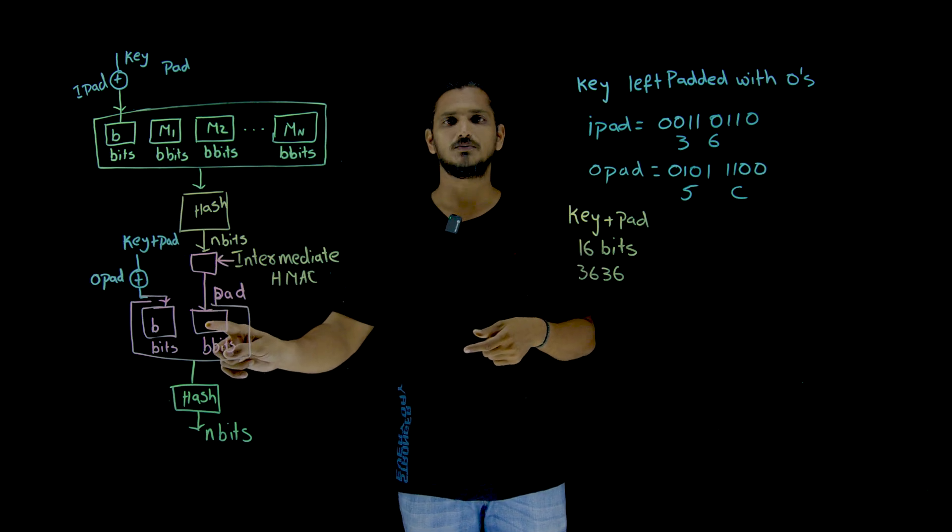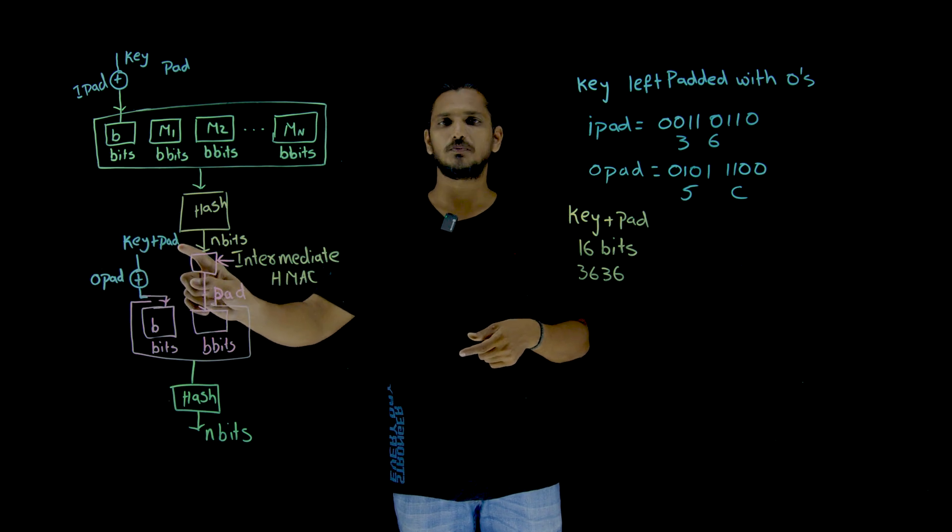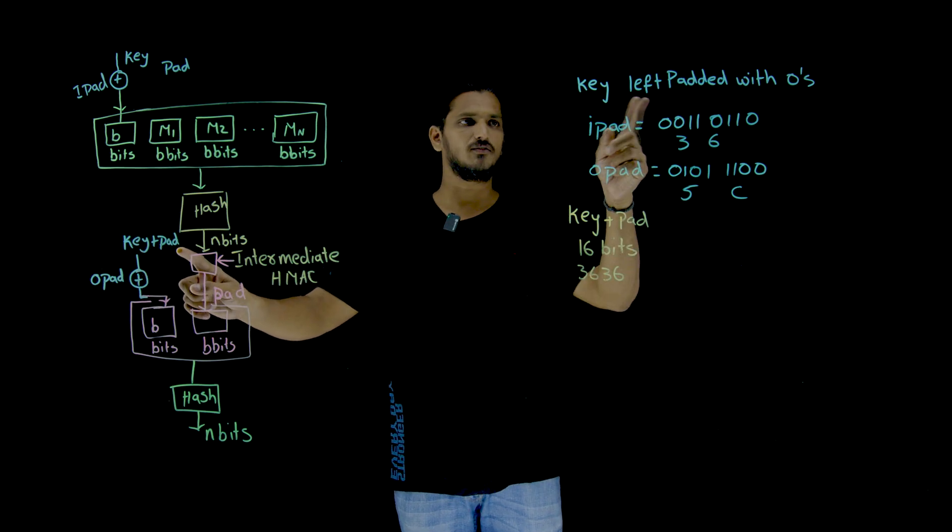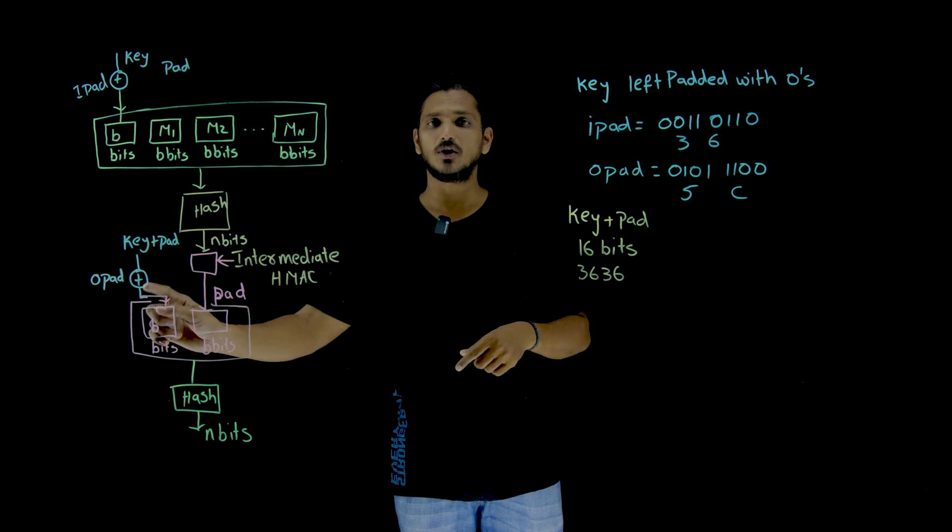Make it as b bits. We are going to take the key plus pad value, padded with left zeros, and this is going to be XOR with O-pad.